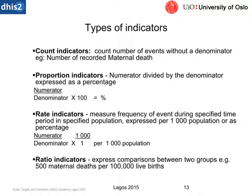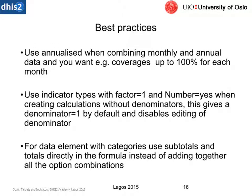Ratio indicators are comparisons between two groups — that's as simple as it gets. For best practices, make sure you're using annualized data when combining monthly and annual data. Data is collected in different time periods and you always want to compare the right thing — you don't want to compare annual data and monthly data in a confusing way. If you have monthly data you need to make sure it covers all of the months compared to annual data. When you want to create calculations without denominators, use a factor of one, meaning the denominator is one and your numerator therefore equals your indicator.